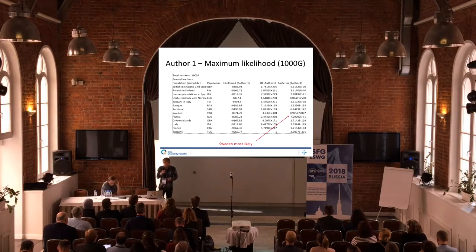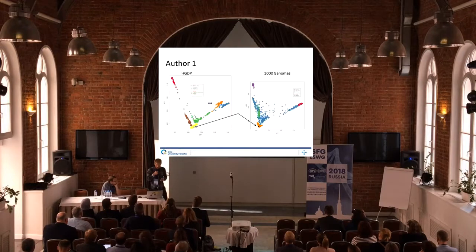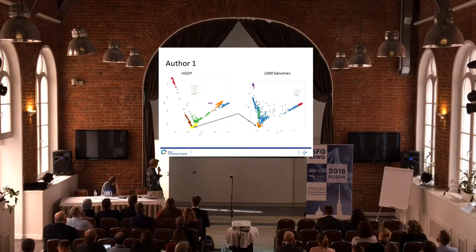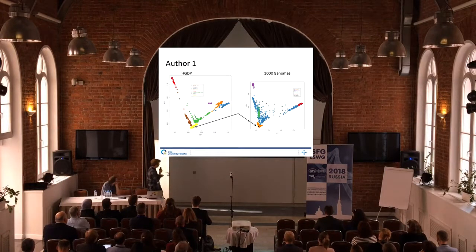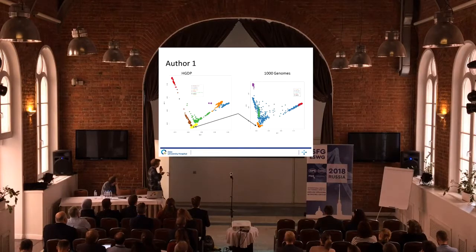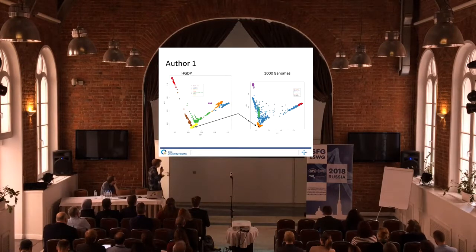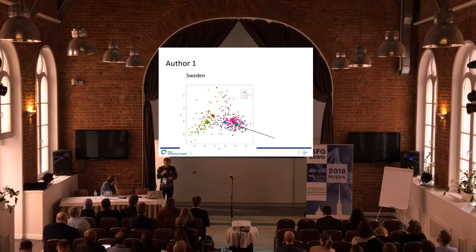Of course this is only based on the reference populations we have here. The genome geography approach would be quite a better alternative if you don't have the regional population. The black spot here is actually the author, and we see that in both comparisons this person clusters in Sweden, with the different parts of Sweden visible.